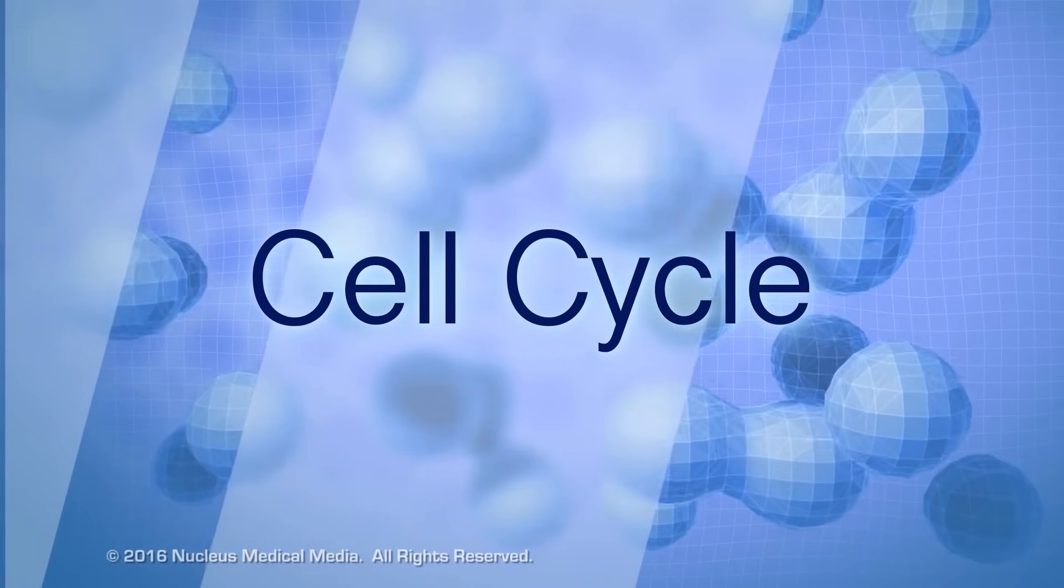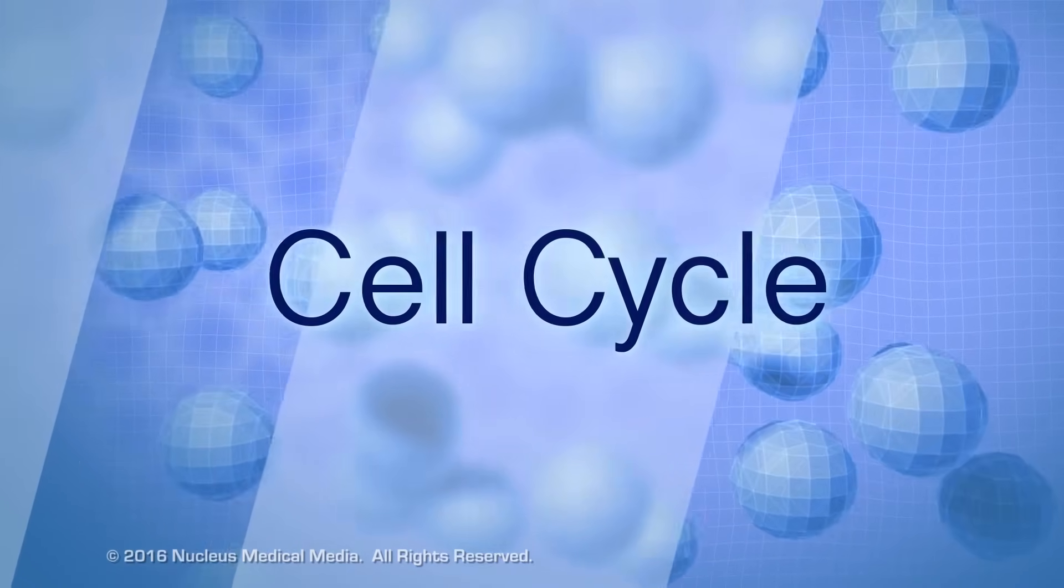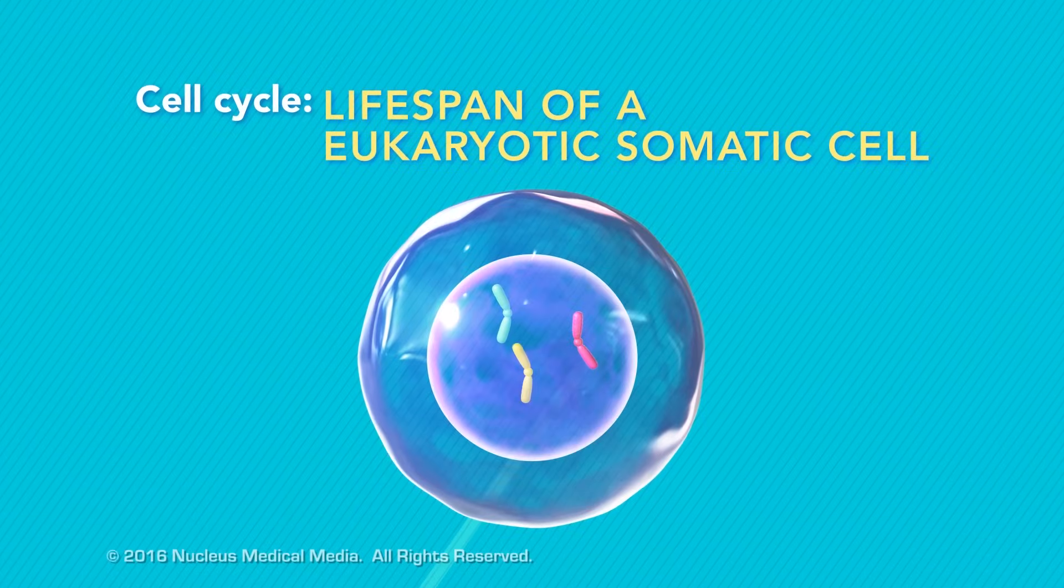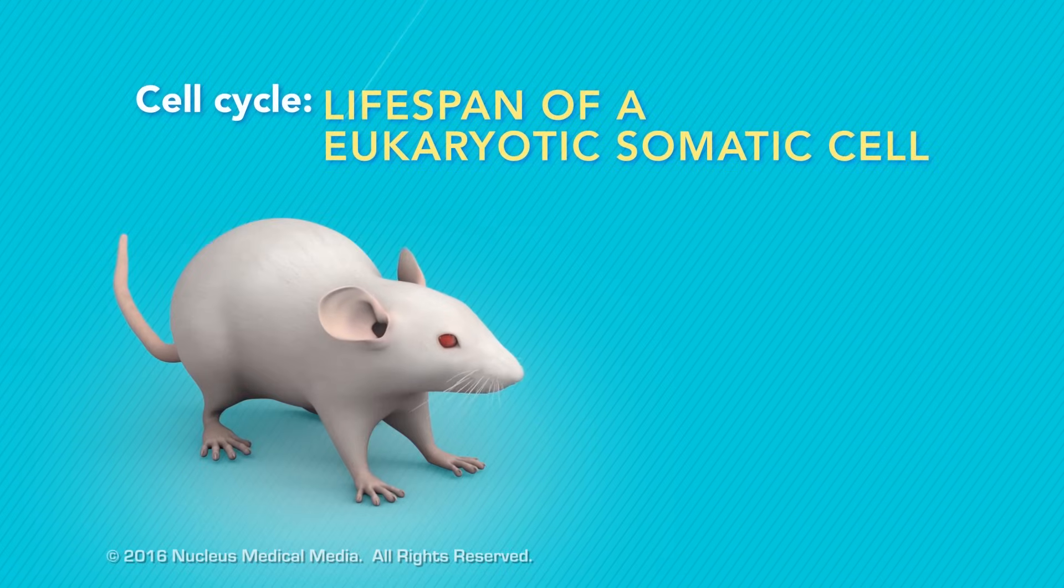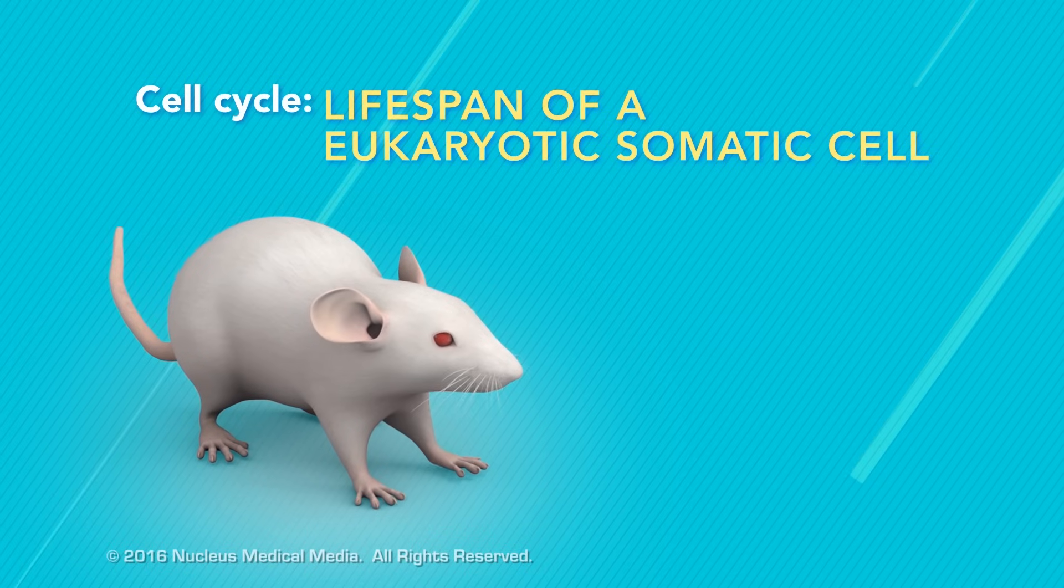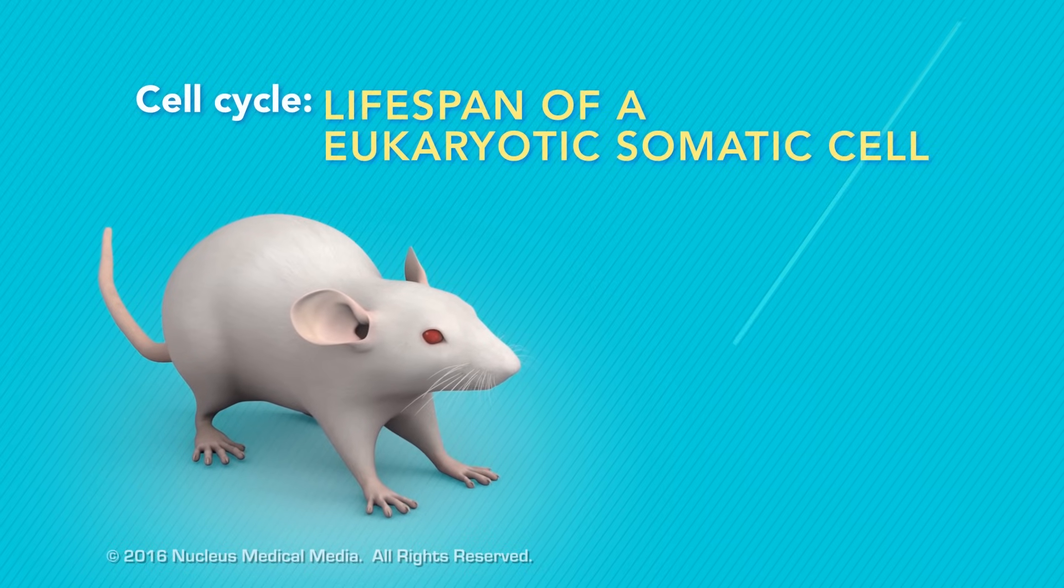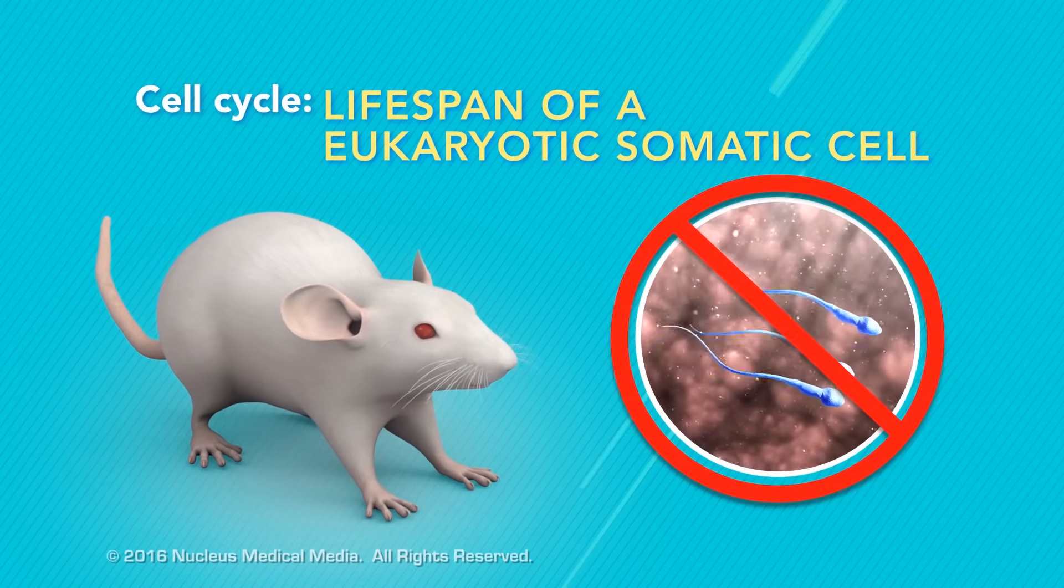In this lesson, we'll be looking at the cell cycle. This is the lifespan of a eukaryotic somatic cell. A somatic cell is any cell in the body of an organism, except for sex cells, such as sperm and egg cells.